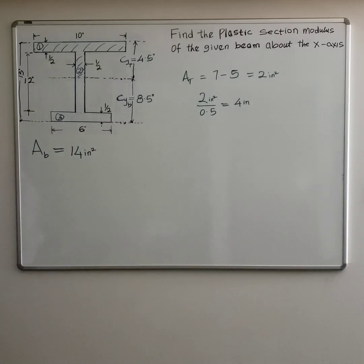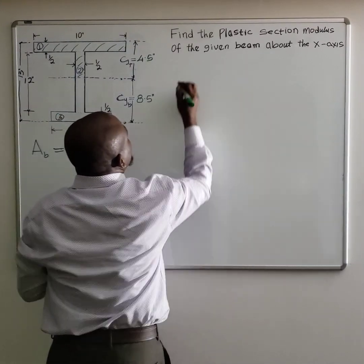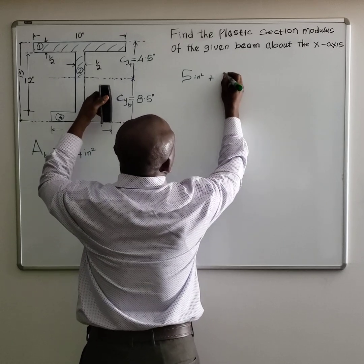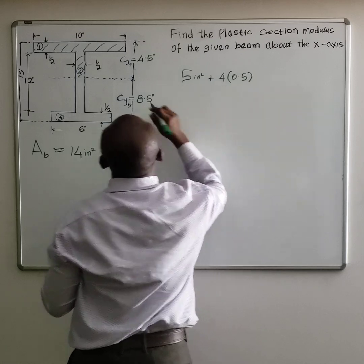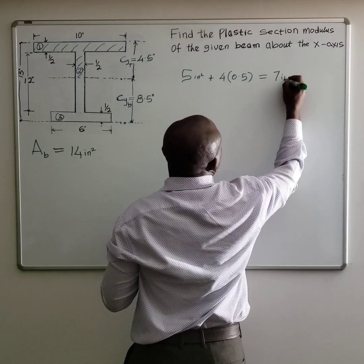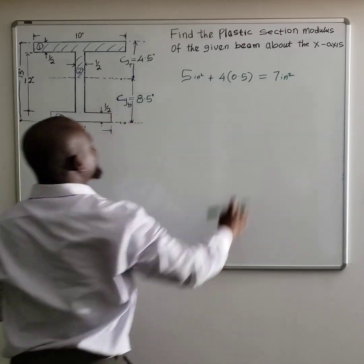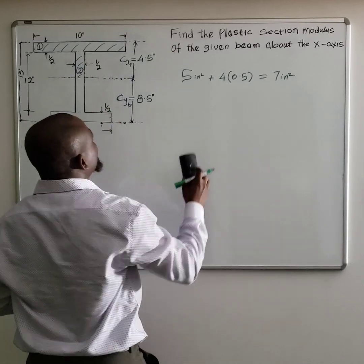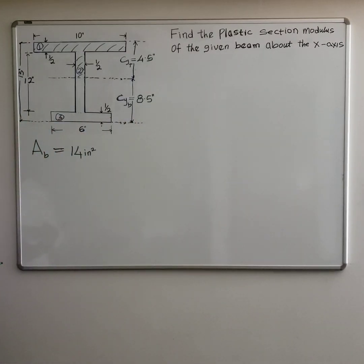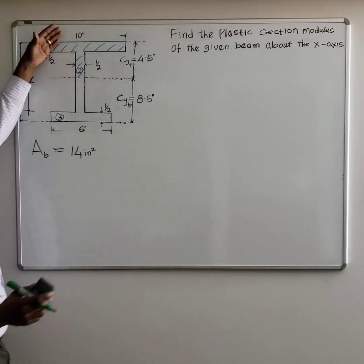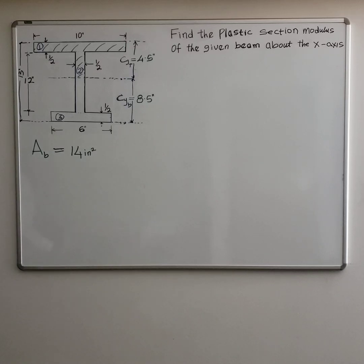If you do the calculation for the area, you get 5 square inches plus 4 inches multiplied by 0.5 inches, plus 0.5 inches multiplied by 5 inches, giving you 7 square inches. When you deduct 7 square inches from the total, you have 7 square inches left — which is the area of the bottom. So your centroid for calculating your plastic section modulus must be at the point that divides the beam equally in area from top and bottom.